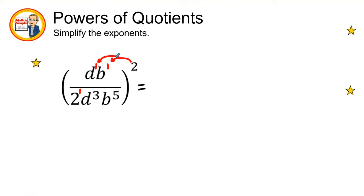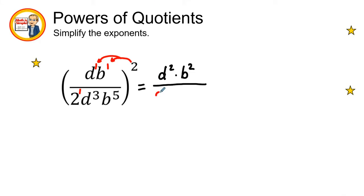d to the first times 2 is 2, so we'll have d squared. 1 times 2 is 2, so it's b squared as well. Down at the bottom, the coefficient 2 is raised to the first power — 1 times 2 is 2 — so our coefficient is going to be 2 to the second power, which we know is 4, and we will simplify that in the next step.